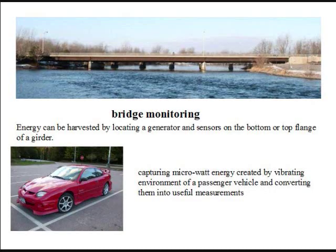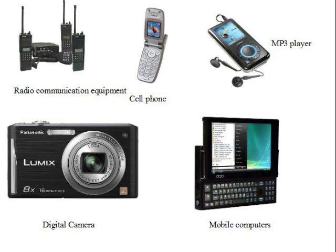Energy harvesting devices have many applications in our daily life. I will give you some examples. This is my cell phone — we can use the energy harvesting device to charge the battery. The device can also be used in bridge monitoring, where energy can be harvested by locating a generator and sensors on the bottom or top fringe of a girder, using the vibration of cars. Various devices can be charged using an energy harvesting device, such as radio communication equipment, cell phone, MP3 player, digital camera, mobile computer, and so on.